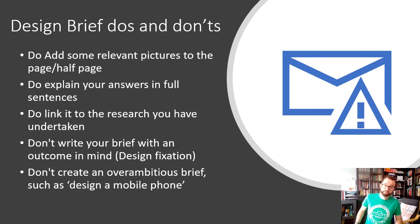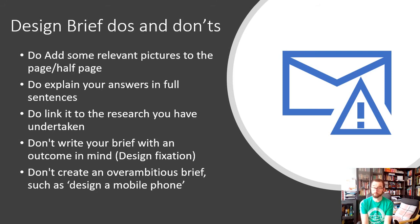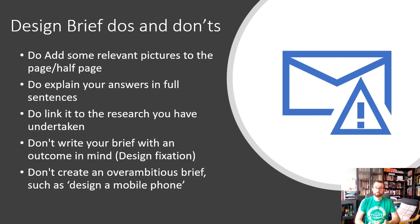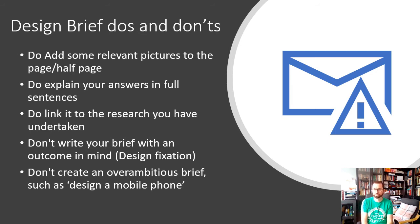Don't create an over-ambitious brief. I recently set some work for Key Stage 3 and one student said they were going to make a mobile phone as their practical work — I wouldn't even know where to start myself, and that requires a team of people working over many years. So don't be over-ambitious. Similarly, writing 'I'm making a lamp and when I whistle it will move around the desk and come to me' is possibly a little over-ambitious for the GCSE project. Be mindful of that in your write-up.